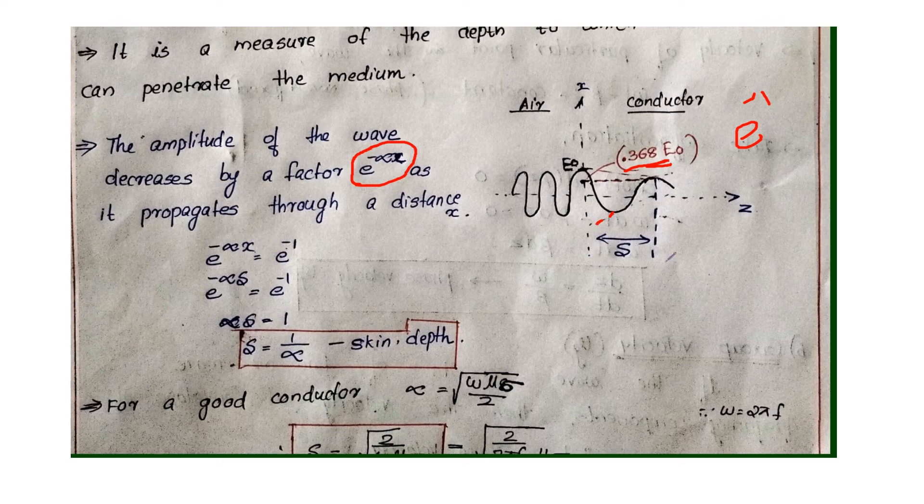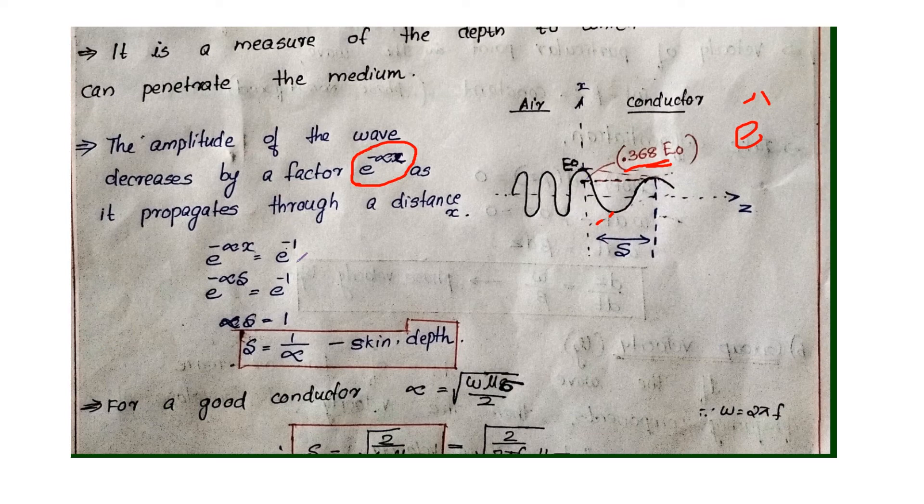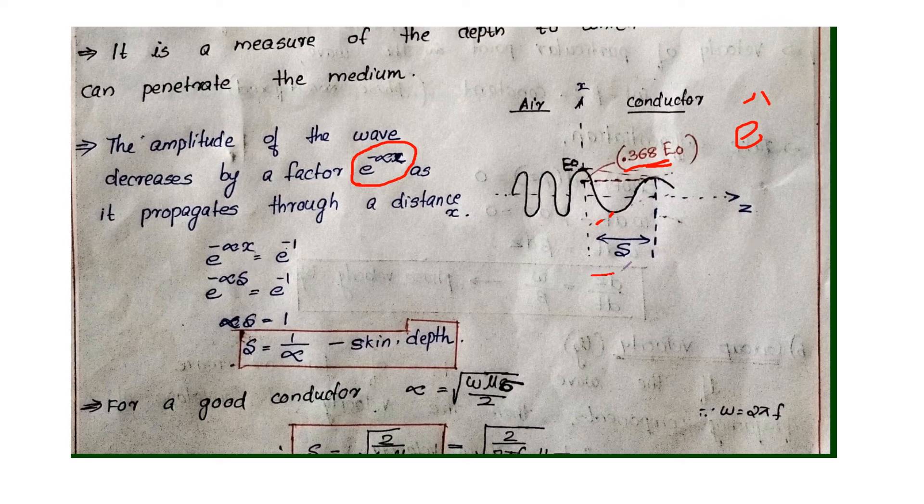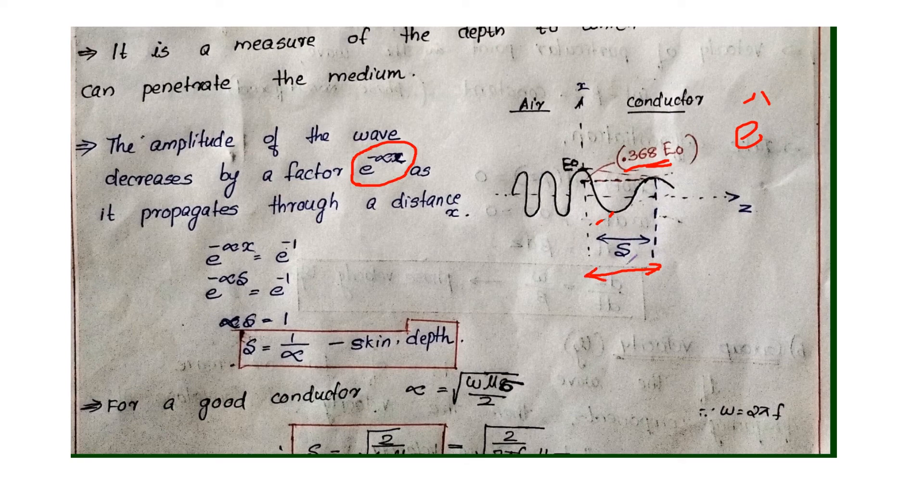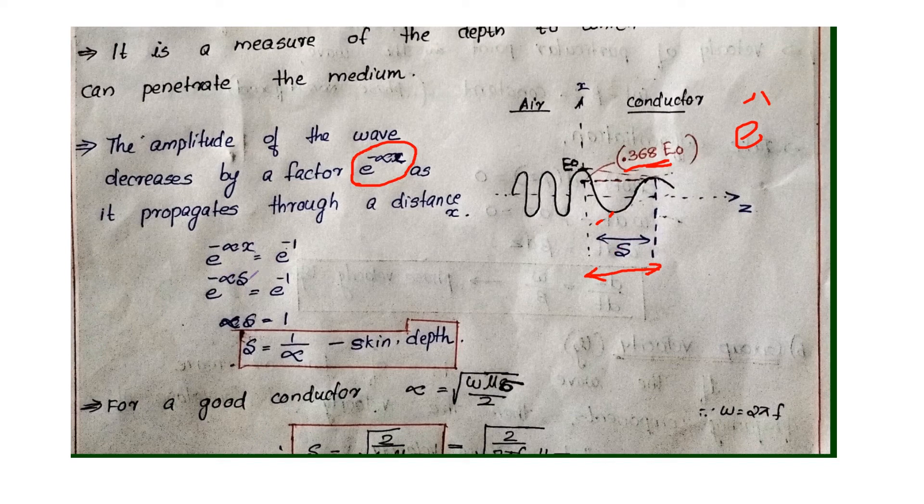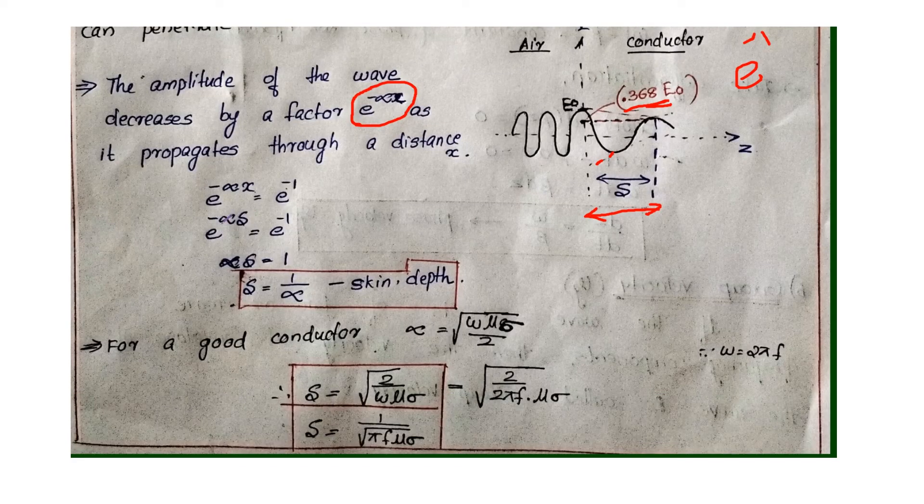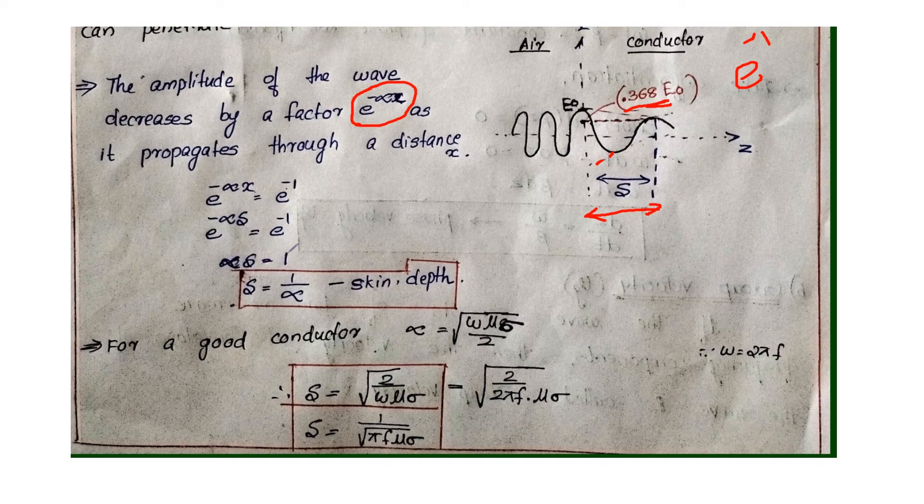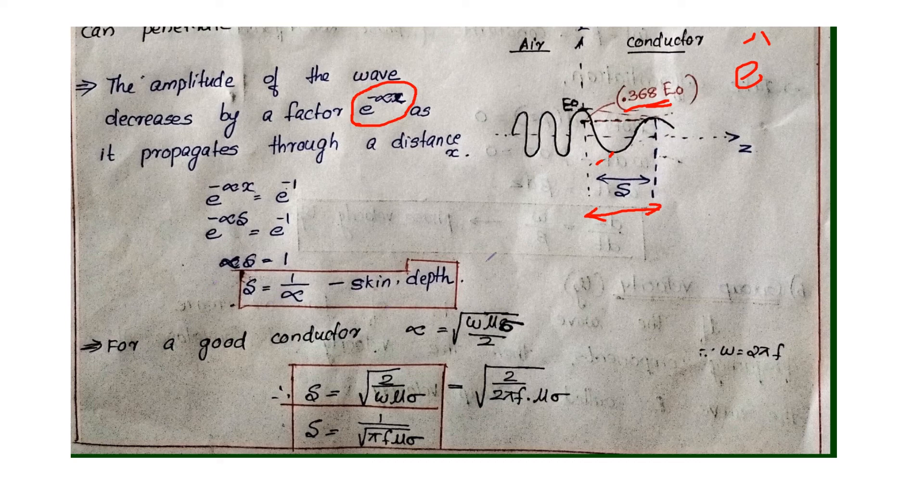If we calculate skin depth, how much distance and how much amplitude decrease: e raised to minus 1. Skin depth notation is delta, so e raised to minus alpha delta equals e raised to minus 1. This equation gives alpha delta equals 1. Therefore, delta is 1 by alpha. 1 by alpha is skin depth.